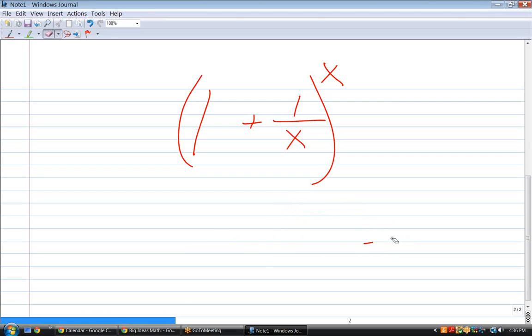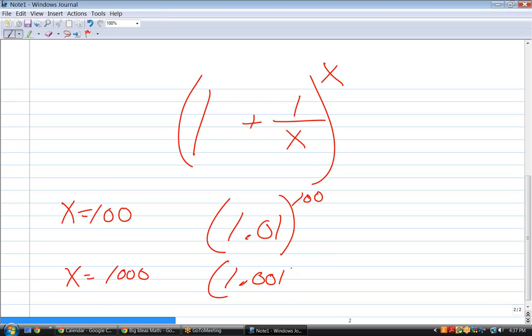Well, as x gets very, very large, what's in the parentheses gets closer and closer to one. In other words, if I said let x equal a hundred, then I would have 1.01 to the hundredth power. With me? Okay. If I said let's let x equal a thousand, then I would have 1.001 to the thousandth power. What do you think happens as x goes to infinity? What does this number go to?